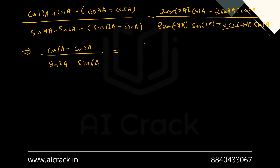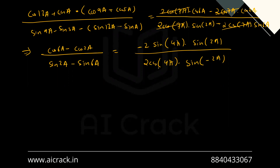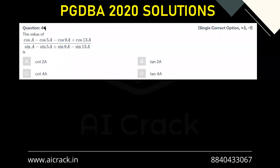Now applying the identities again: cos 6a minus cos 2a equals minus 2 sin((6a+2a)/2) sin((6a-2a)/2) = minus 2 sin(4a) sin(2a). And sin 2a minus sin 6a equals 2 cos((2a+6a)/2) sin((2a-6a)/2) = 2 cos(4a) times sin(minus 2a). The sin(2a) terms and the negative signs cancel, leaving us with cos(4a) — wait, the result simplifies to cot(4a). So option D is the correct answer.